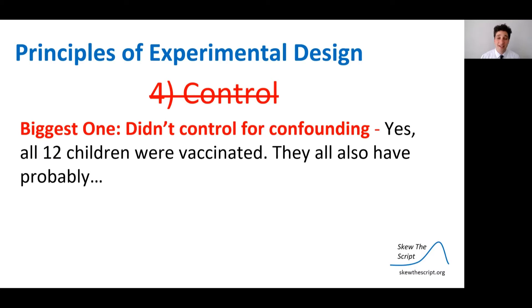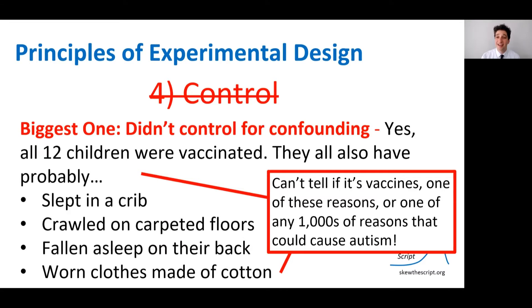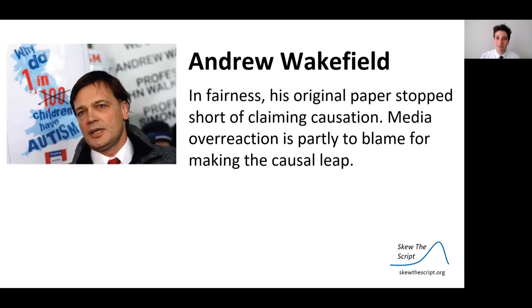Yes, all 12 children were vaccinated, but they'd also probably slept in a crib, crawled on carpeted floors, fallen asleep on their back, and worn cotton clothes. How can you tell if it's vaccines or any of thousands of other reasons that could be a driving cause or risk factor for autism spectrum disorder? In fairness, his original paper stopped short of claiming causation, and media overreaction is partly to blame for making that causal leap.